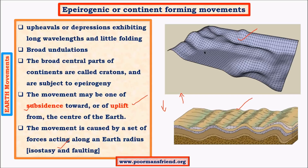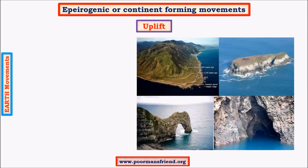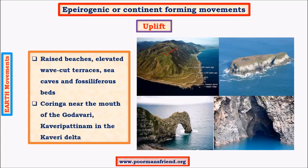The central parts of continents are called cratons, as they differ from the margins or edges of the plate. Under epirogenic movements, examples of upliftment include raised beaches near coastal areas, wave-cut terraces, fossiliferous beds, and sea caves. These are all examples of uplifted landforms. Upliftment is a radial movement acting away from the center along the earth's radius.